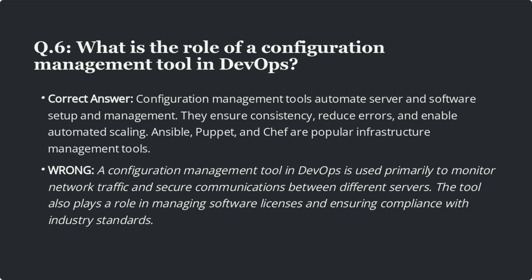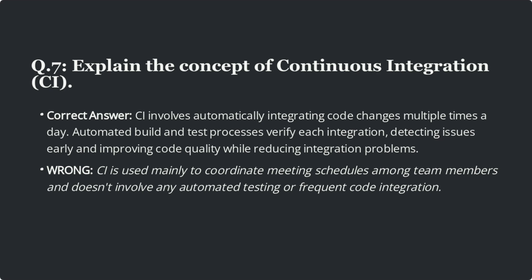Question 7: Explain the concept of continuous integration (CI). The correct answer is CI involves automatically integrating code changes multiple times a day. Automated build and test processes verify each integration, detecting issues early and improving code quality while reducing integration problems. Wrong answer: CI is used mainly to coordinate meeting schedules among team members and doesn't involve any automated testing or frequent code integration — this is a wrong answer.